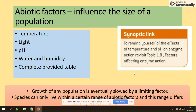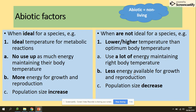The factors that could influence the size of a population include temperature, light, pH, and water. When abiotic factors are ideal for a species — for example, the ideal temperature for metabolic reactions — there is no need to use as much energy maintaining body temperature, so more energy is available for growth and reproduction, and population size will increase.